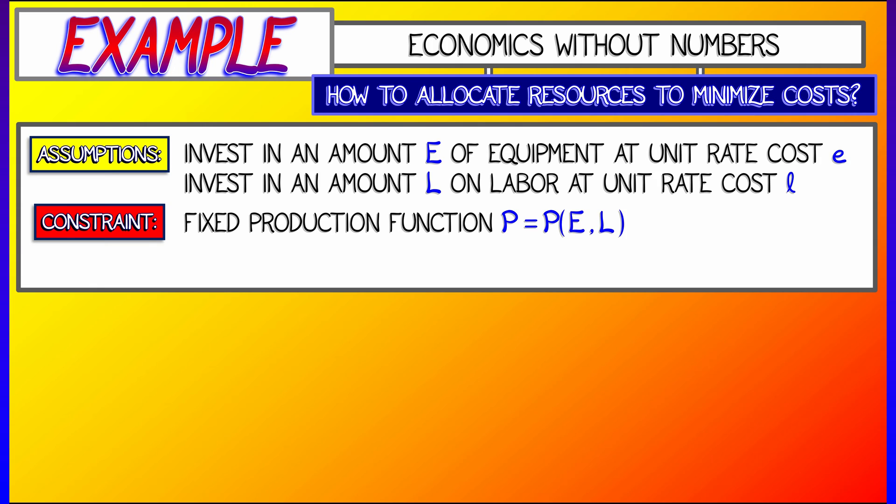And the constraint is you have some fixed production function, call it capital P, depends on big E, big L. That is your output and that is at some constant. You have to produce so much stuff and you can allocate resources to equipment or labor as you wish, but you want to do so in a way that minimizes the cost.